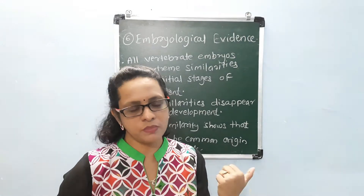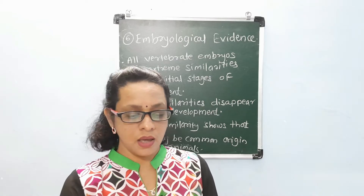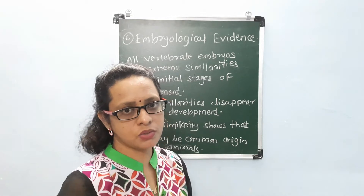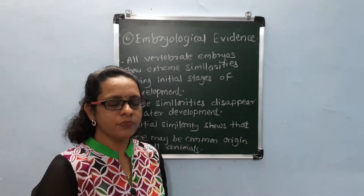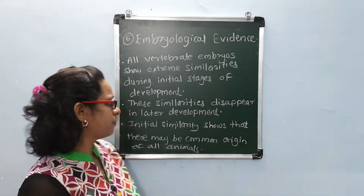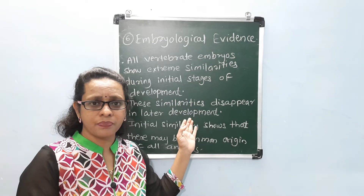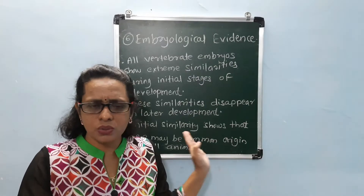You can observe the diagram on your screen. We can observe the embryos of frogs, embryos of chickens, embryos of tortoise, fishes, embryo of rabbit, embryo of cow, and embryo of human being also. We can observe these initial stages of development of these embryos which show similarity in these initial stages. These similarities later, during development, disappear according to that species.